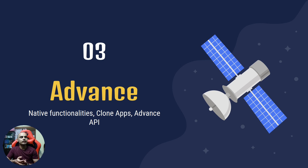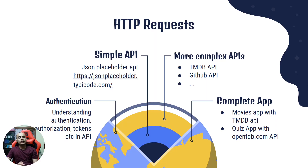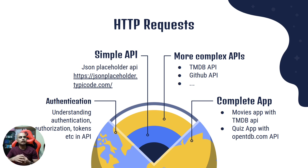Once we know the basics of APIs, layouts, simple functionalities, and packages, we can move on to advanced functionalities. We'll first learn advanced concepts of HTTP requests and actually use APIs in our app to develop demo applications. We can use simple existing APIs like the JSONPlaceholder API to build a simple application, then move on to more complex APIs that have authentication and authorization tokens, like the TMDB API or GitHub API — for example a movies app with TMDB or a quiz app with the OpenTDB API.